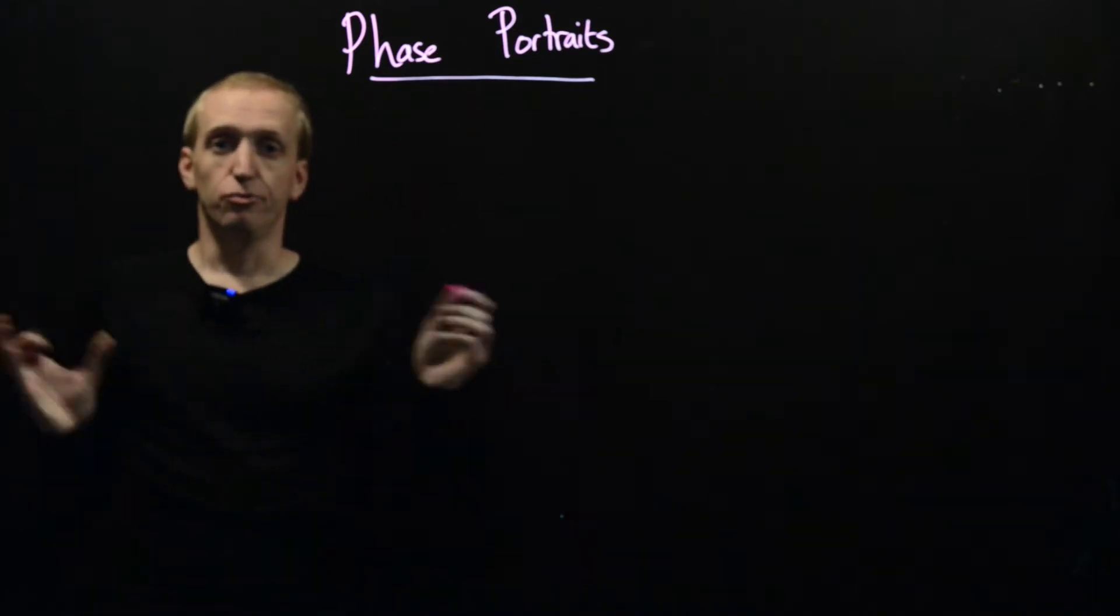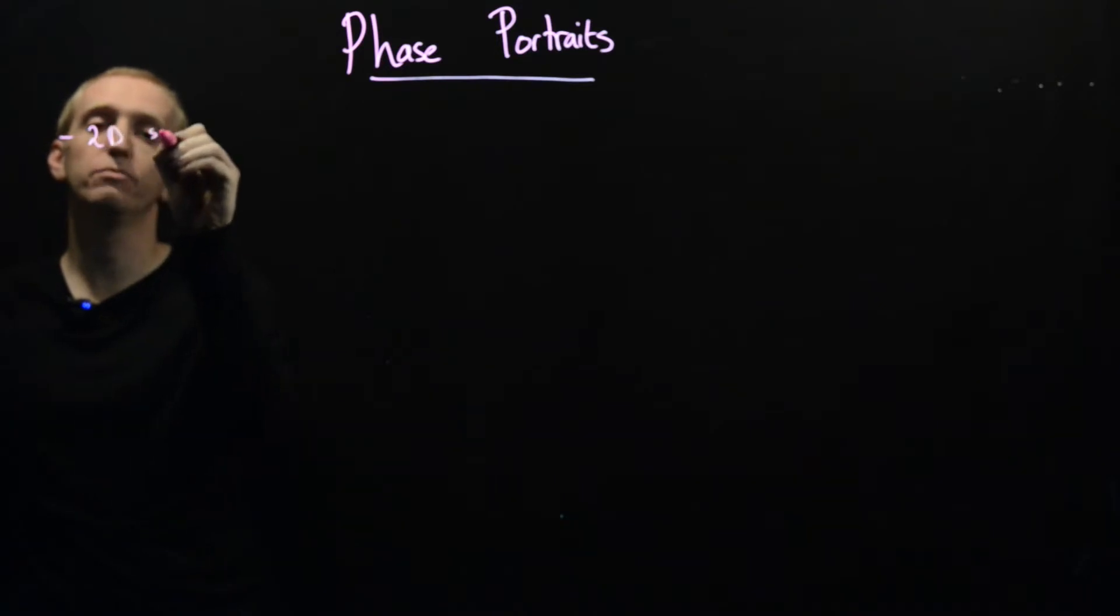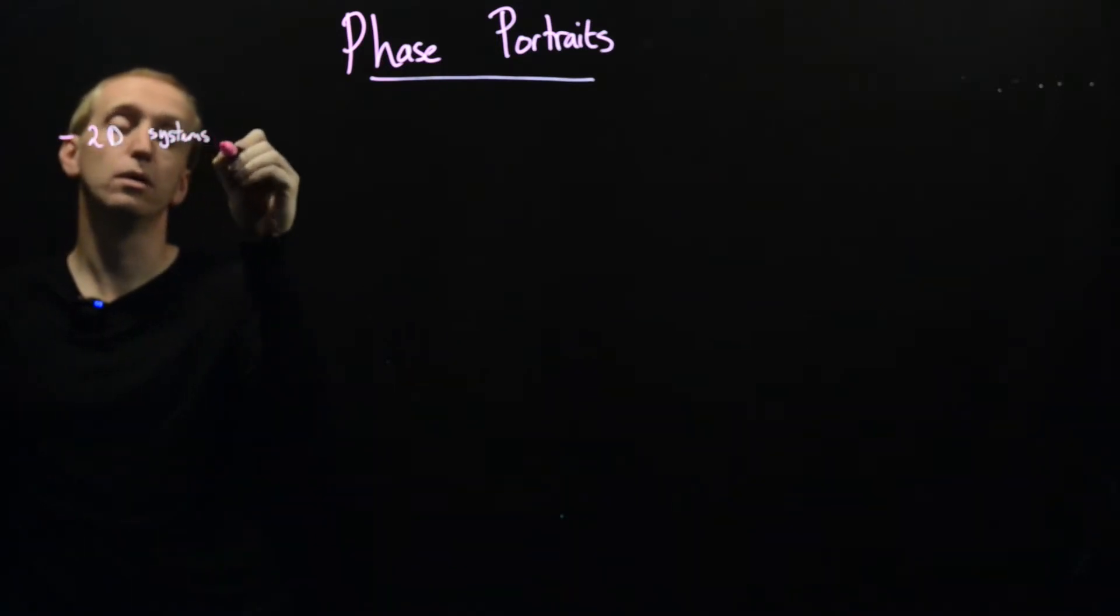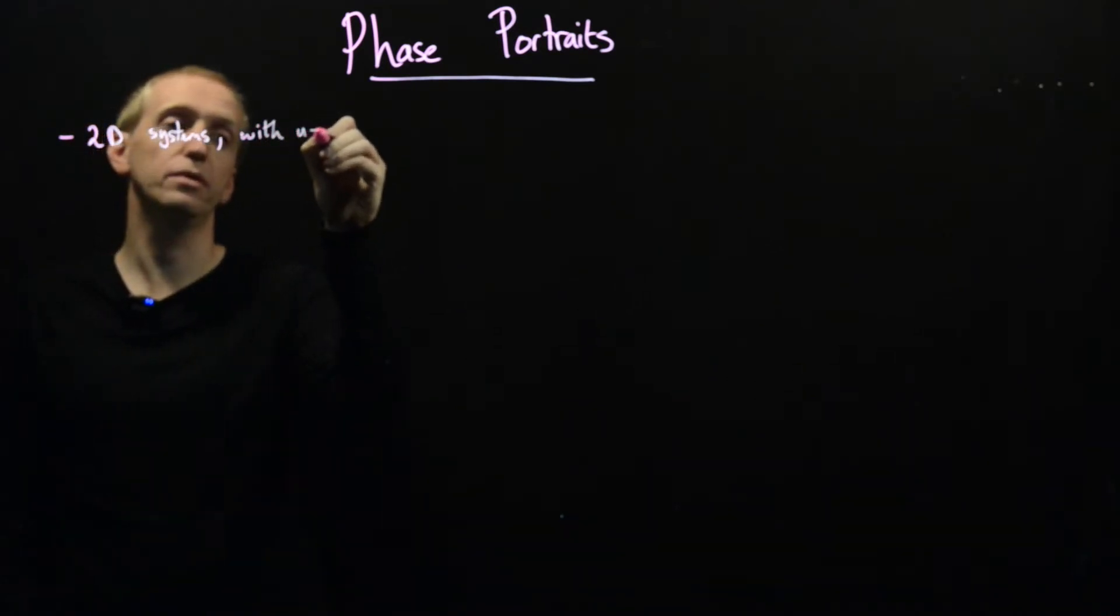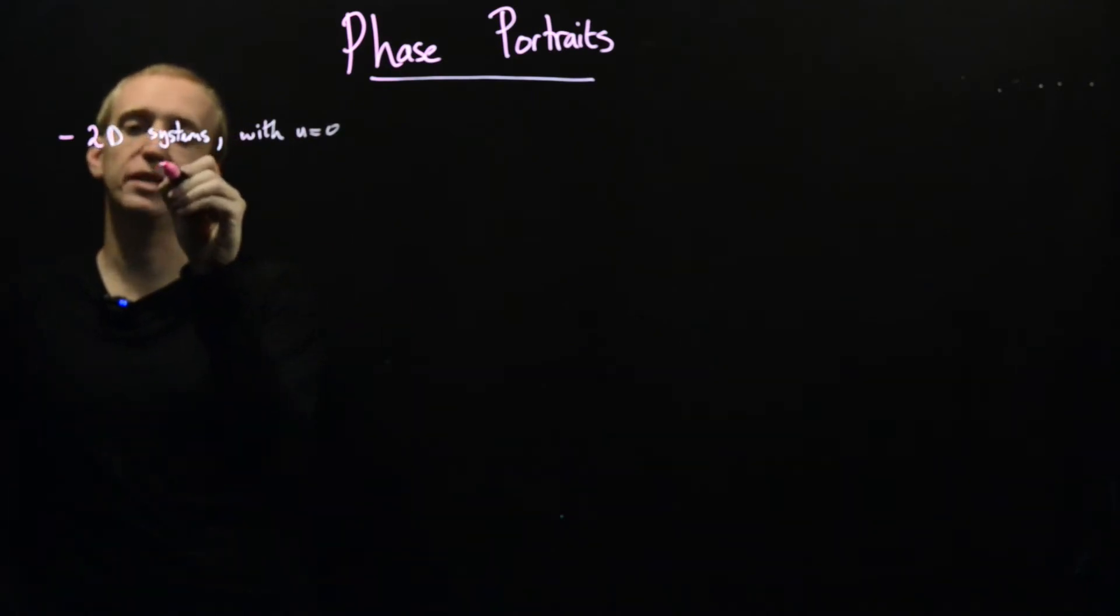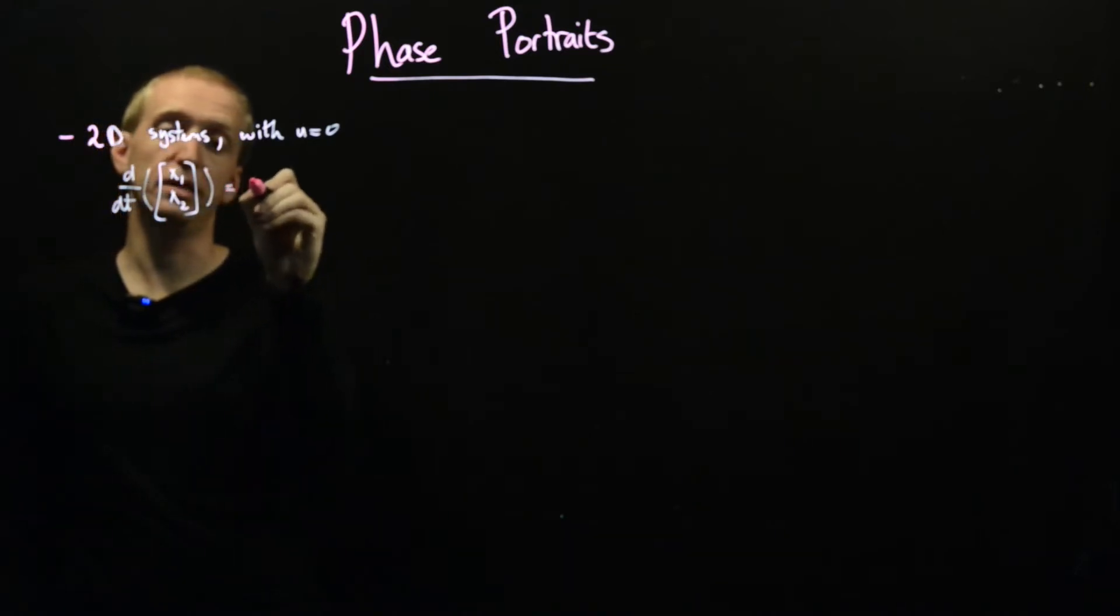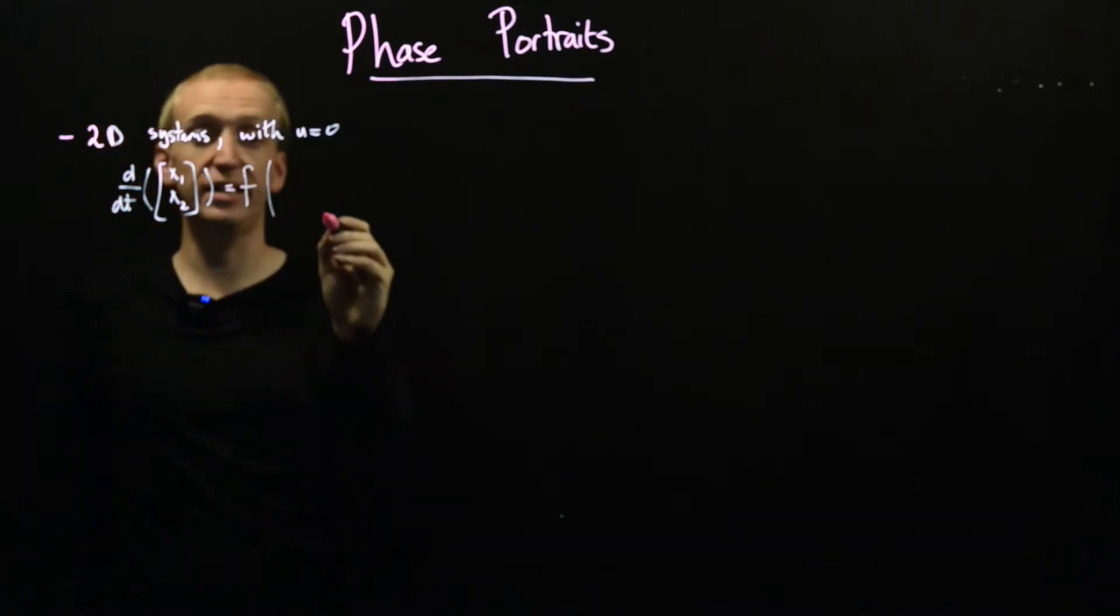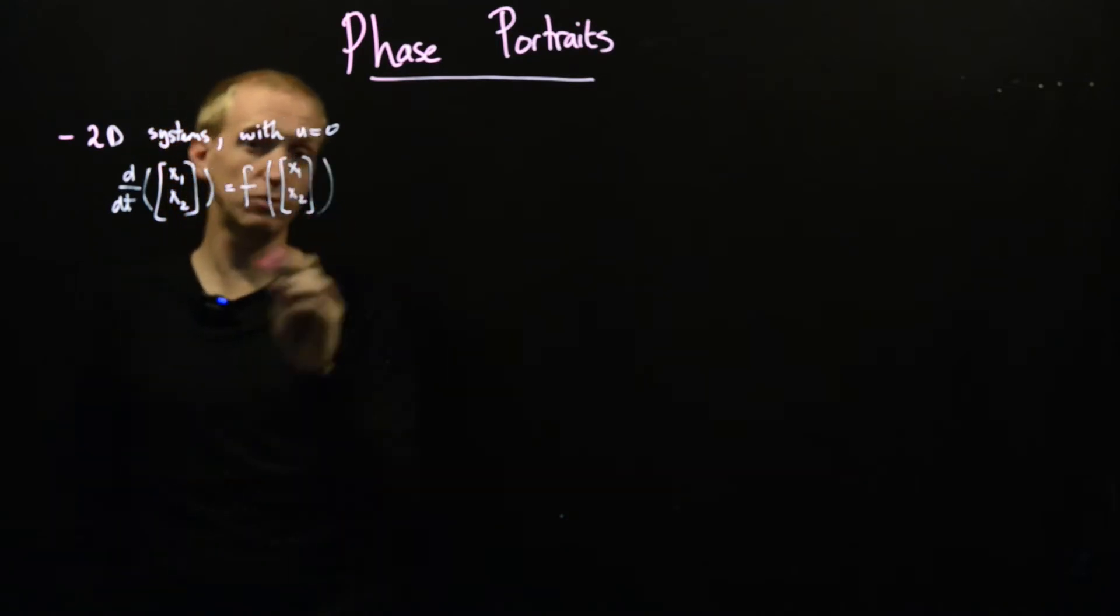So really today we're talking about 2D systems with no input, so with input equal to 0. It means we have a state-space model with two states x1 and x2 in our standard form. So x dot is equal to some function of our state, which in this case just has two components and no input. So this is what we're talking about today.